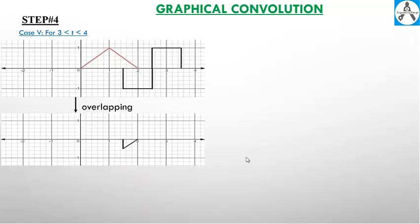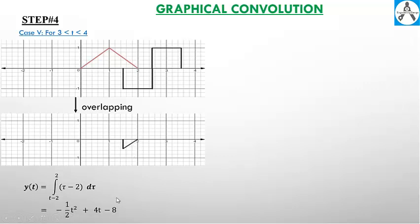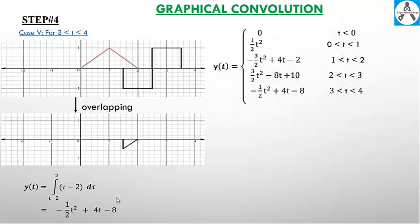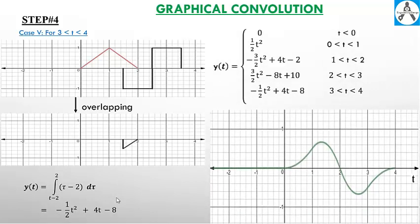Case number five for t from three to four. Case number four: there is a small overlapped area, so integrate it. The slope is positive one and intercept is minus two, with limits from t minus two to two. After solving, we have the result y of t for t minus two to three.